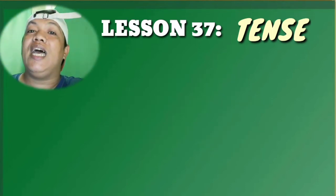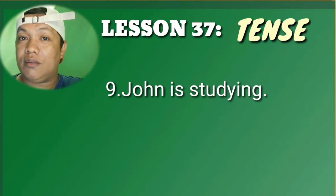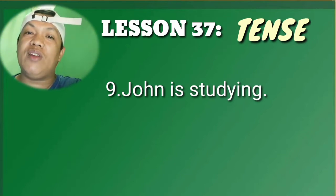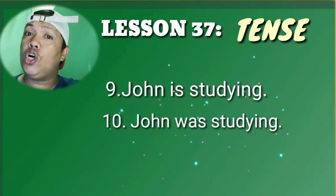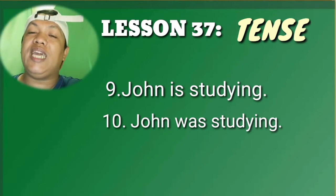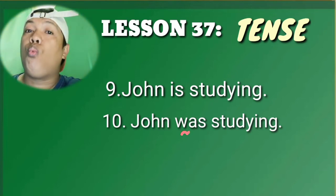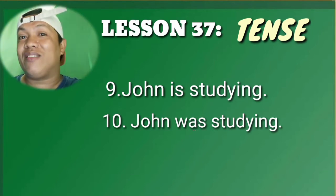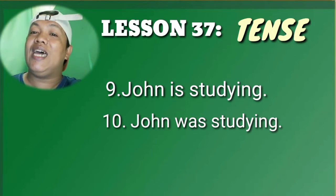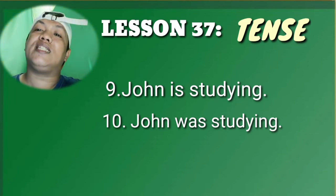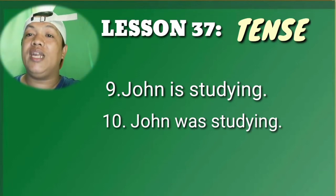Let's move to sentences nine and ten. Sentence nine: 'John is studying.' The underlined word is 'is.' Sentence ten: 'John was studying.' The underlined word is 'was.' The difference between 'is' in sentence nine and 'was' in sentence ten is that 'is' is in the present tense, while 'was' is the past tense of the word 'is.' So: 'is' — present tense; 'was' — past tense.